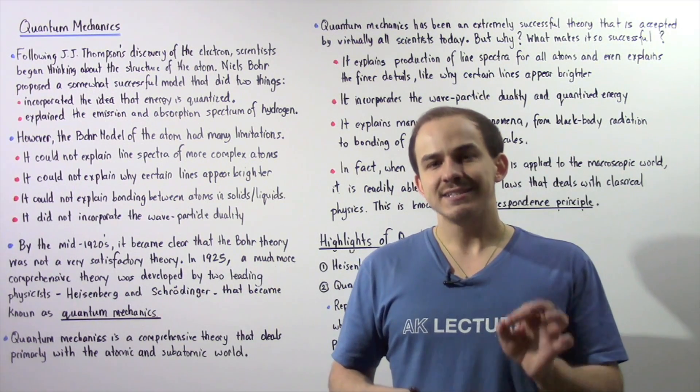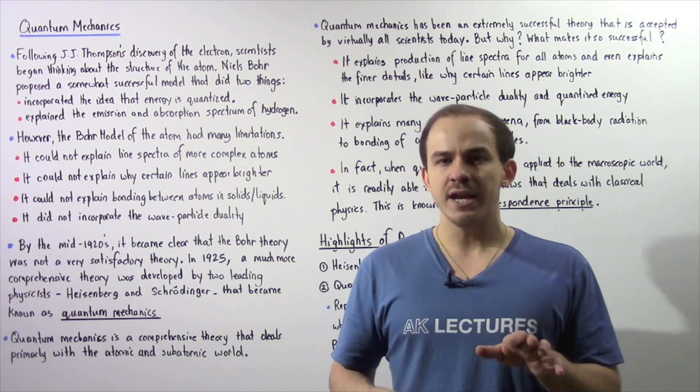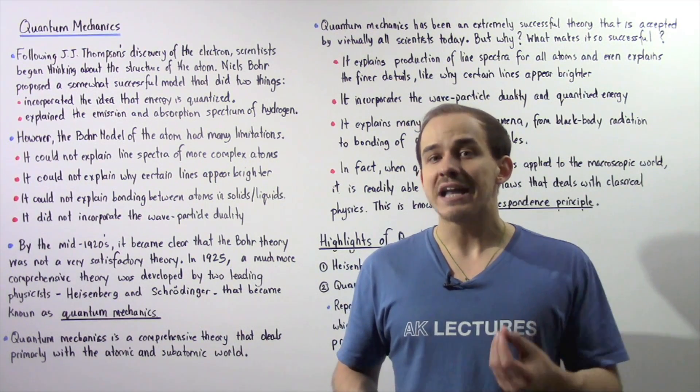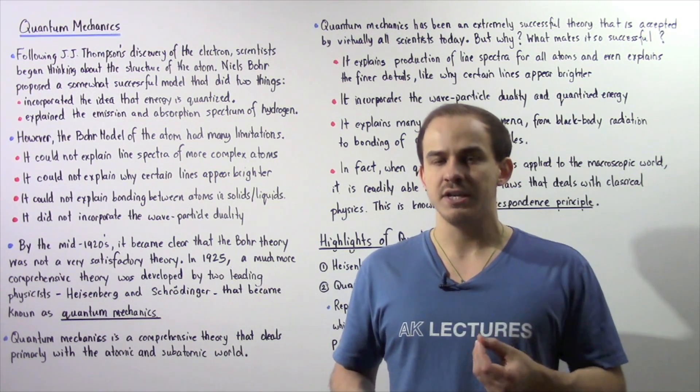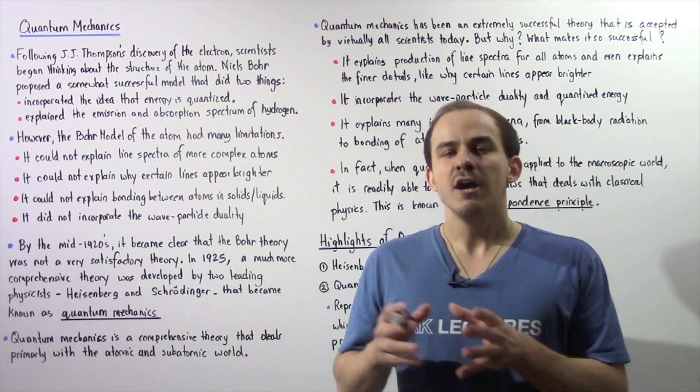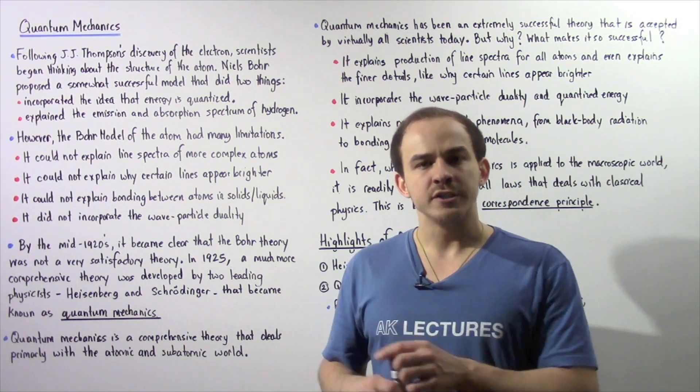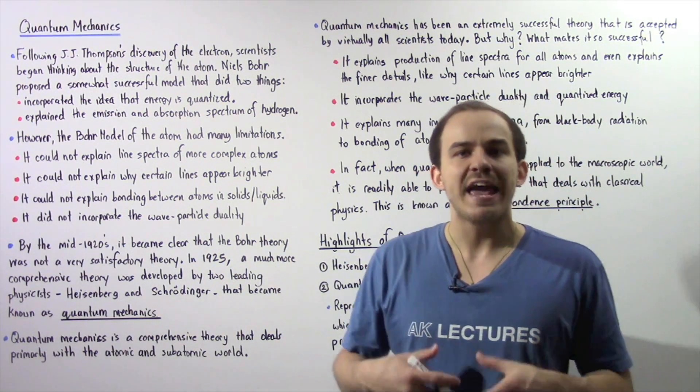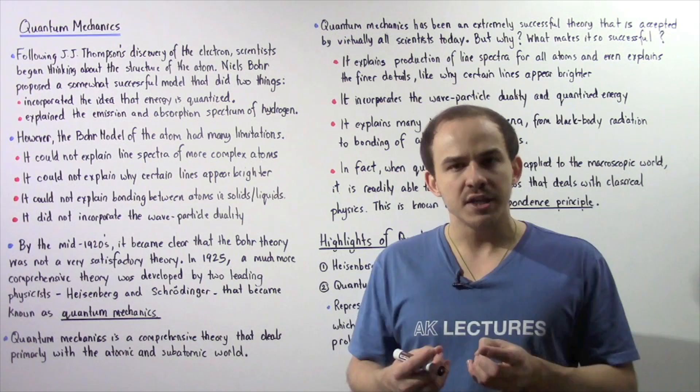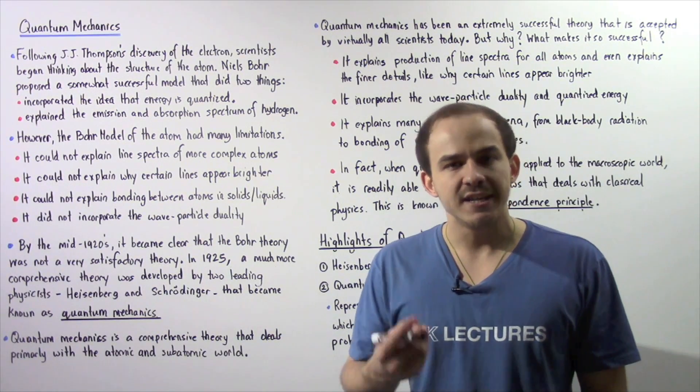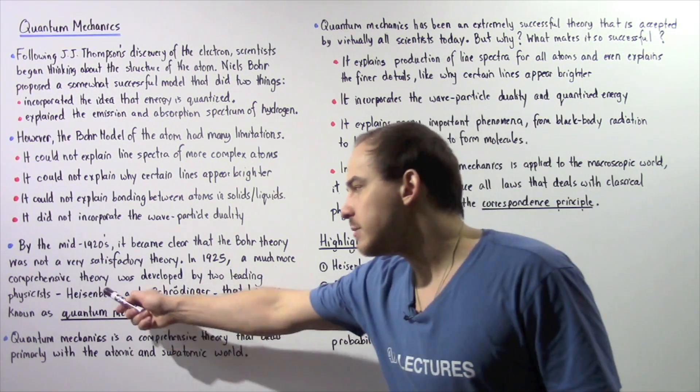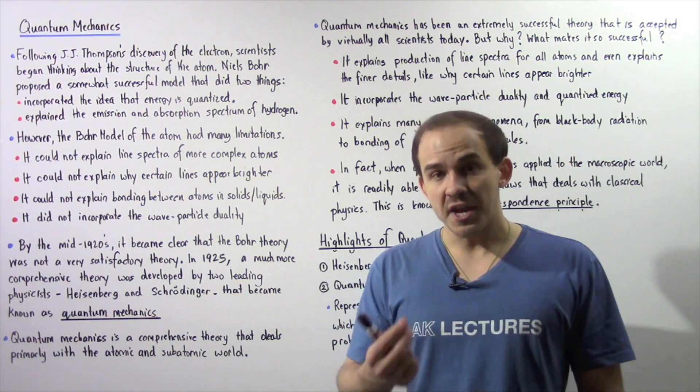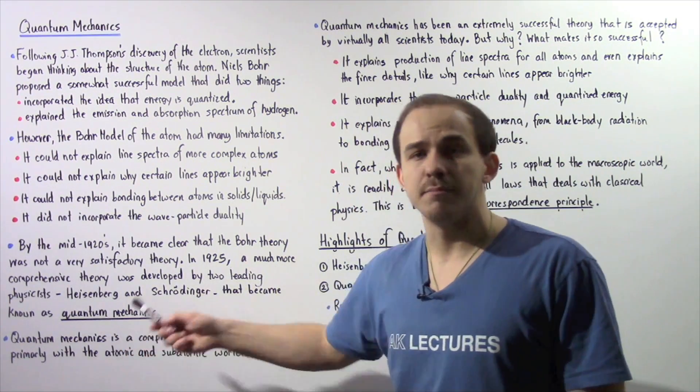So by the mid-1920s, it became clear that the Bohr theory was not a very sufficient theory. It was not a very satisfactory theory from a theoretical perspective and from an experimental point of view. And that's exactly why in 1925, a much more comprehensive theory was developed by two leading physicists, Heisenberg and Schrodinger. And this theory became known as quantum mechanics.